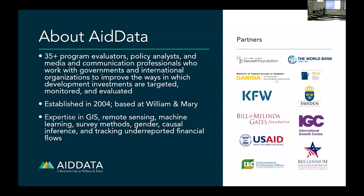AidData is a global research lab from the College of William and Mary Global Research Institute. We provide policymakers, practitioners, and partners with evidence on how sustainable development finance is targeted, monitored, and evaluated. We seek to answer questions: who is funding what, for whom, where, and to what effect? That last part — where and to what effect — is where OpenStreetMap steps in.